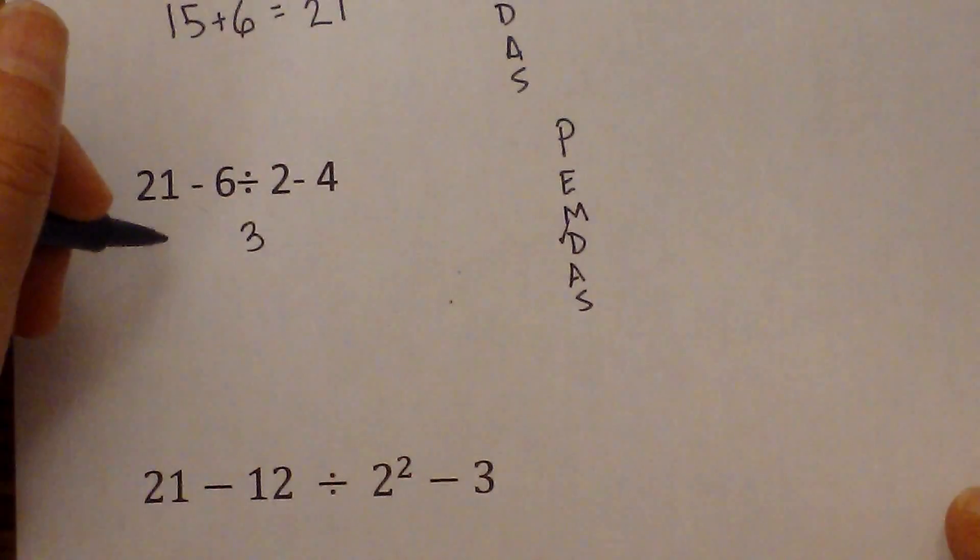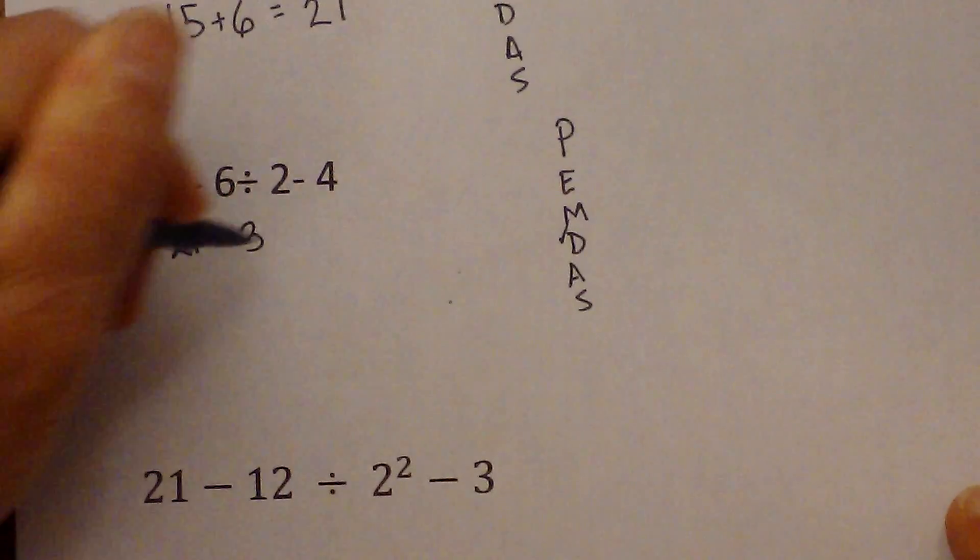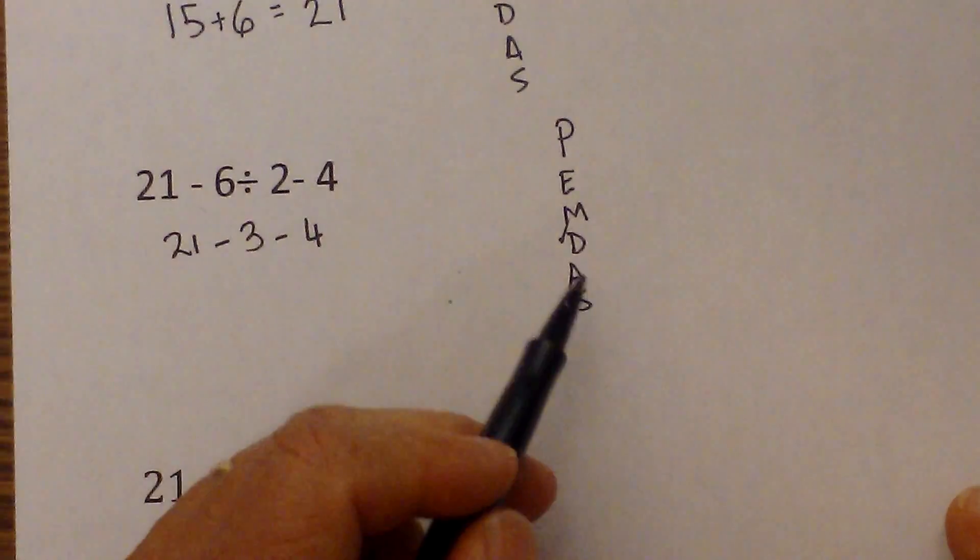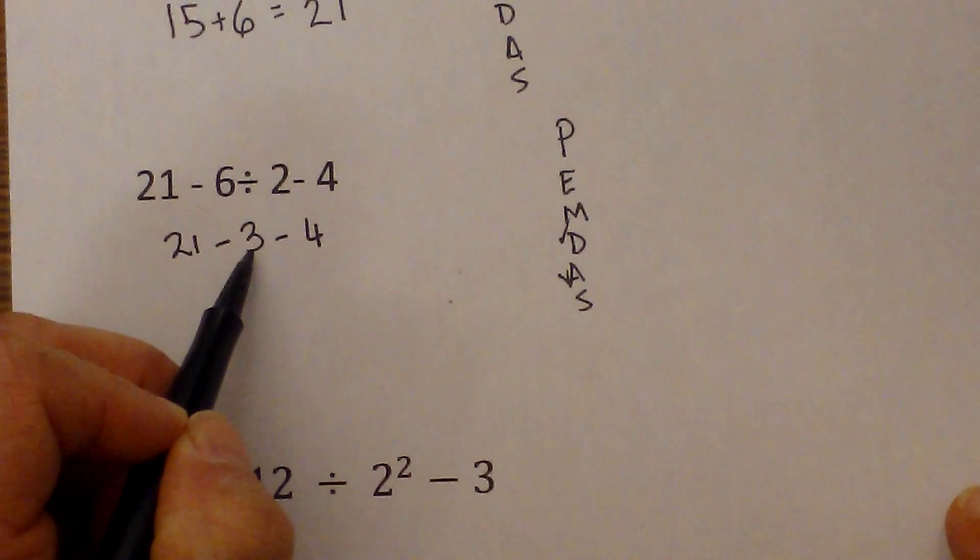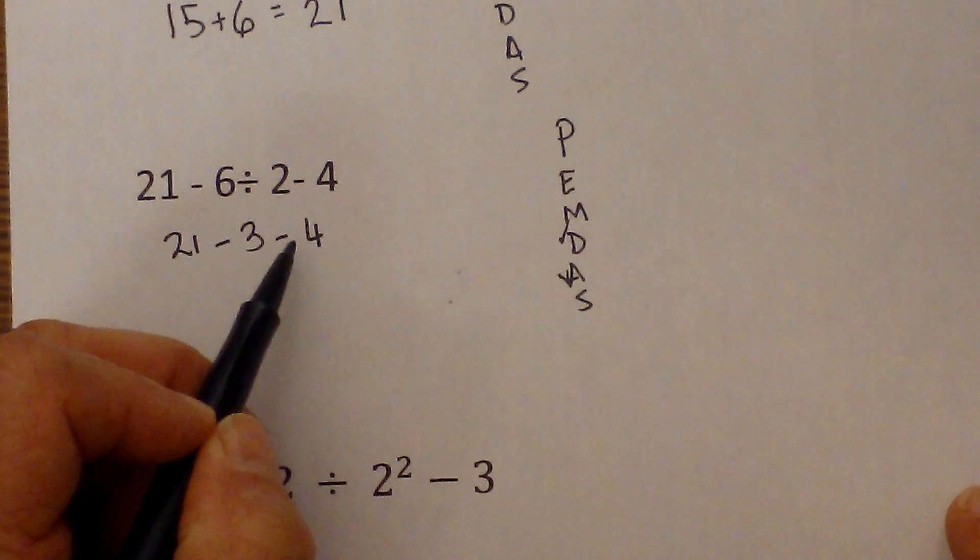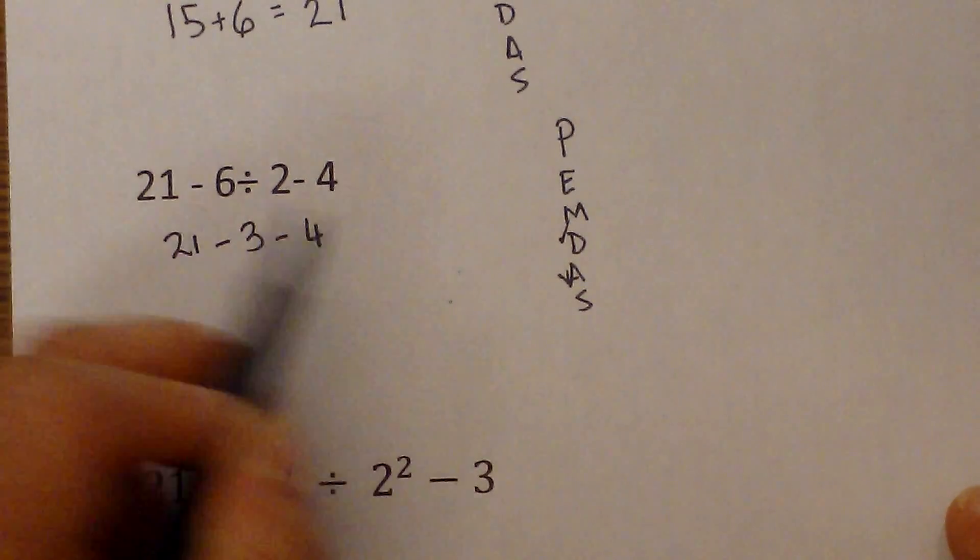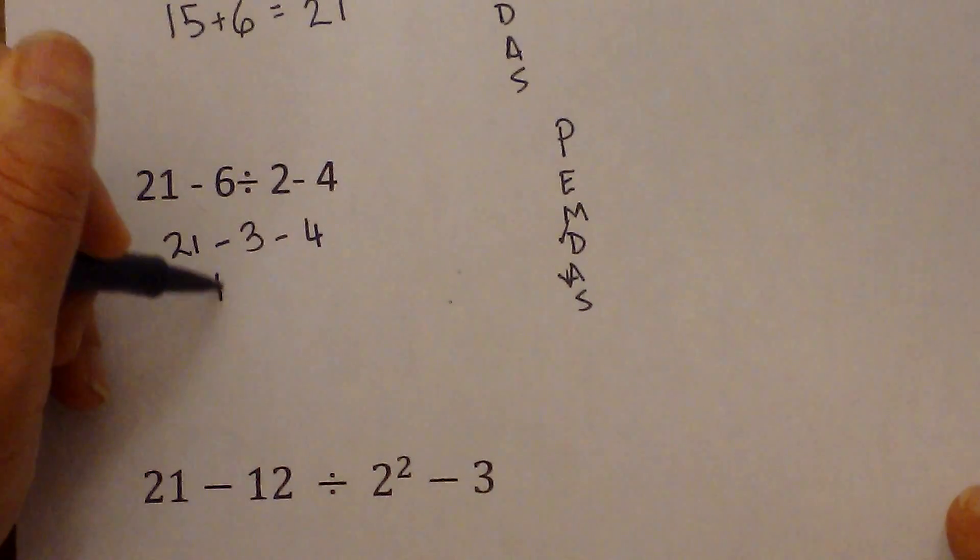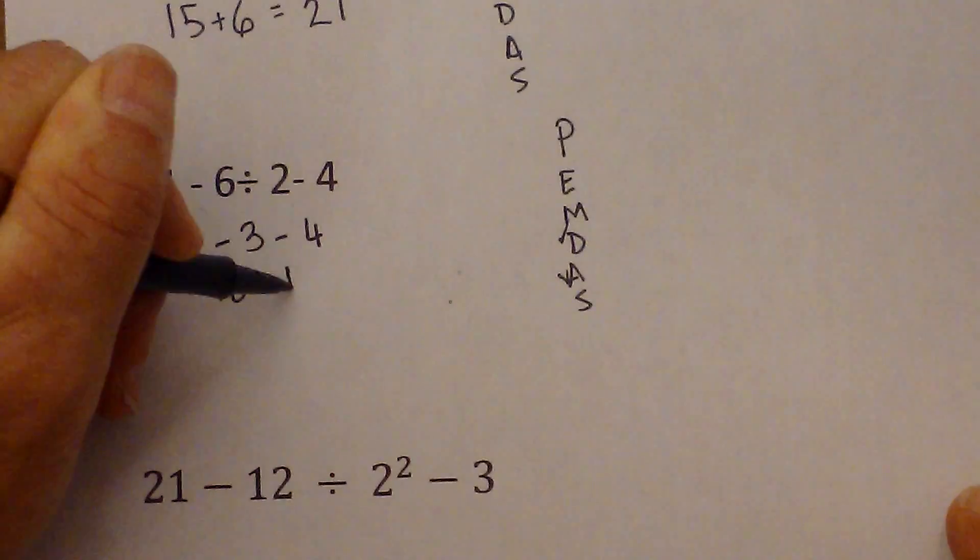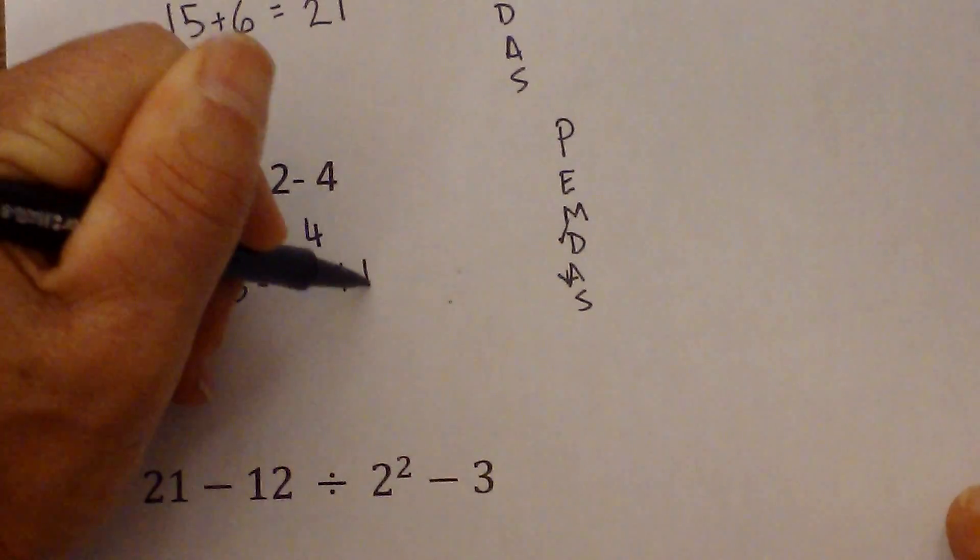So I've marked that off. I'm going to go ahead and bring these down so we can see what's going on. Now we have addition? No. But we have subtraction. Do I start subtraction at the 3? 3 minus 4? No. We start from left to right. So I'm going to go 21 minus 3 is 18, 18 minus 4 is 14.